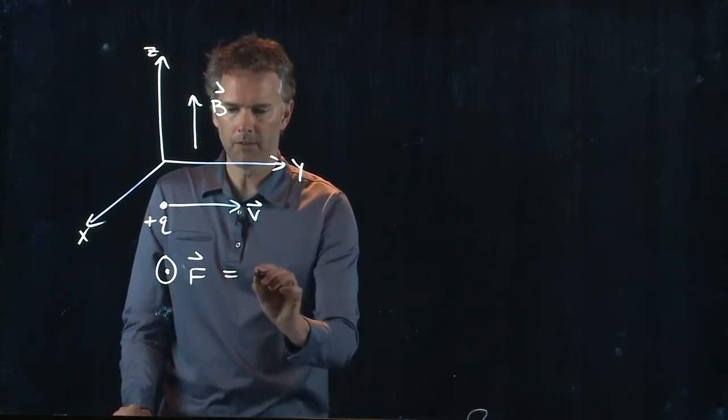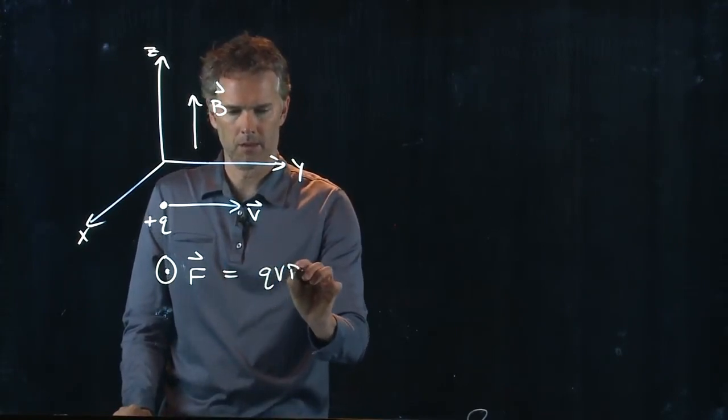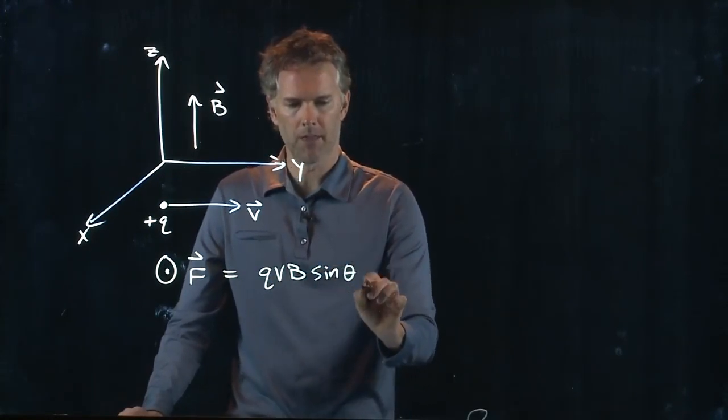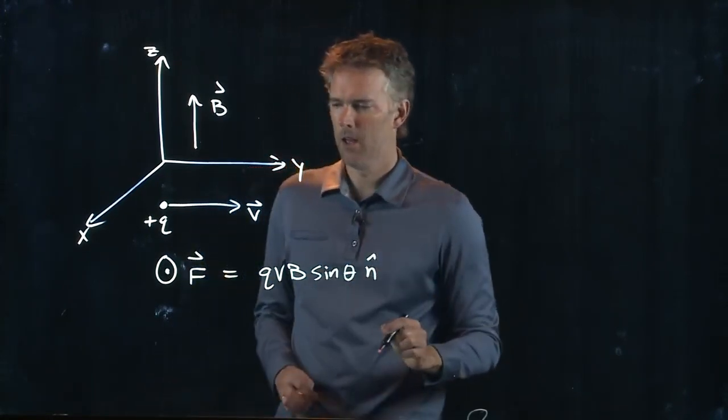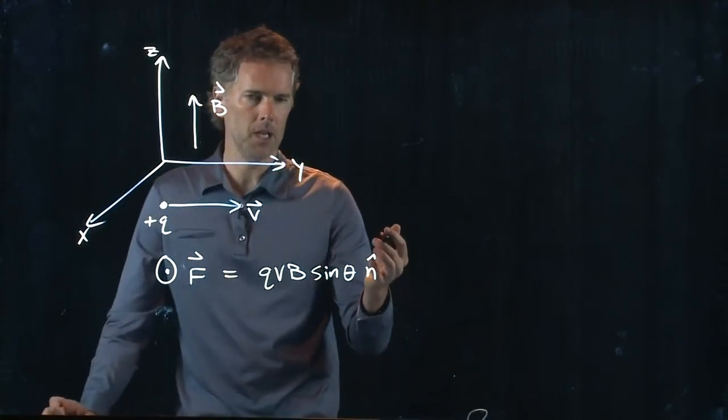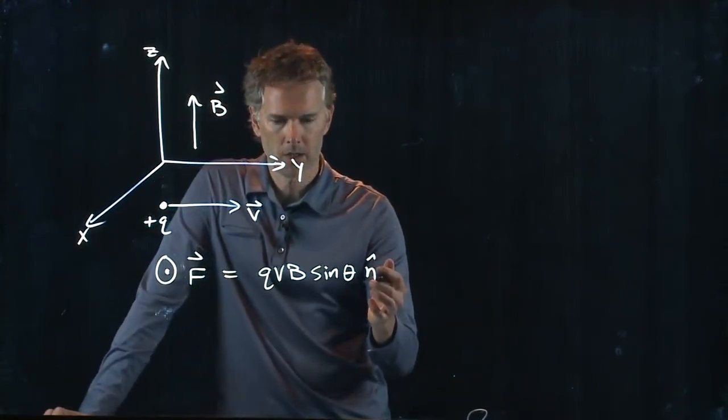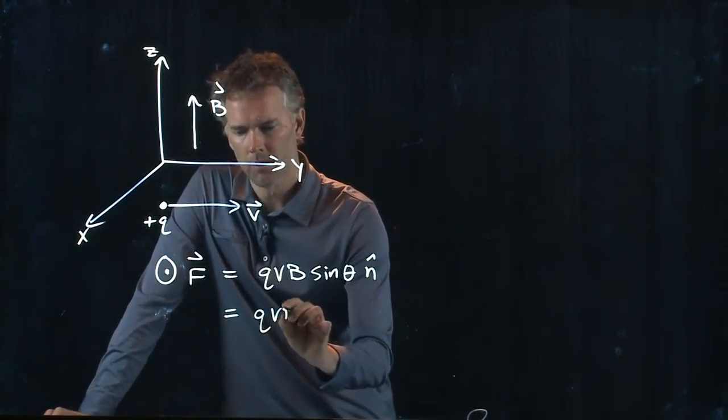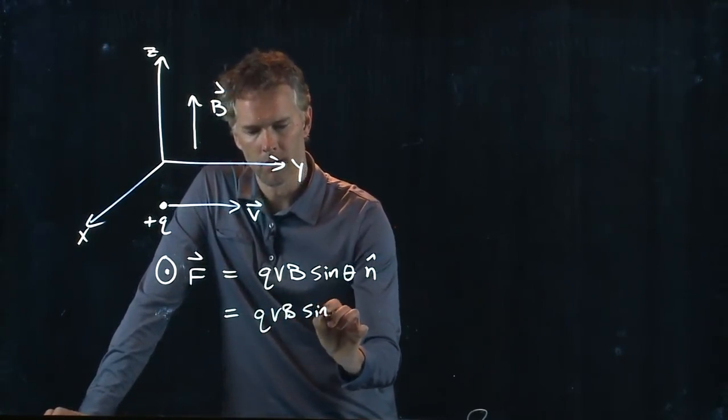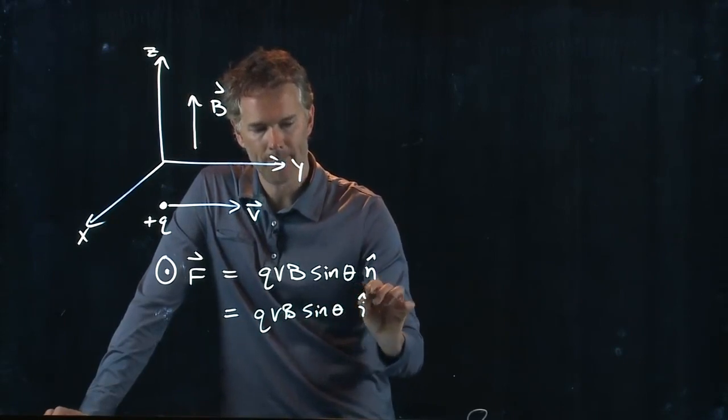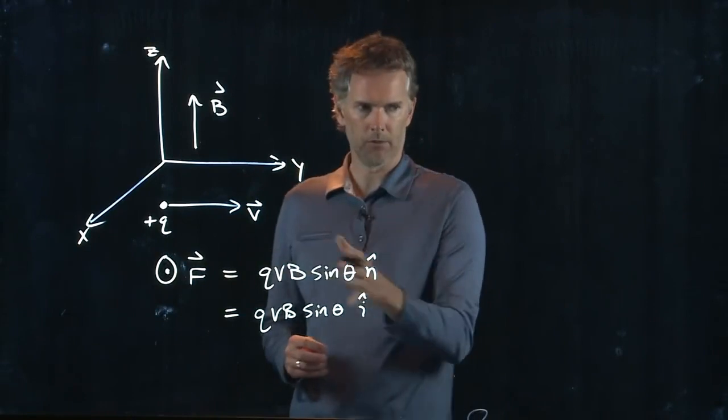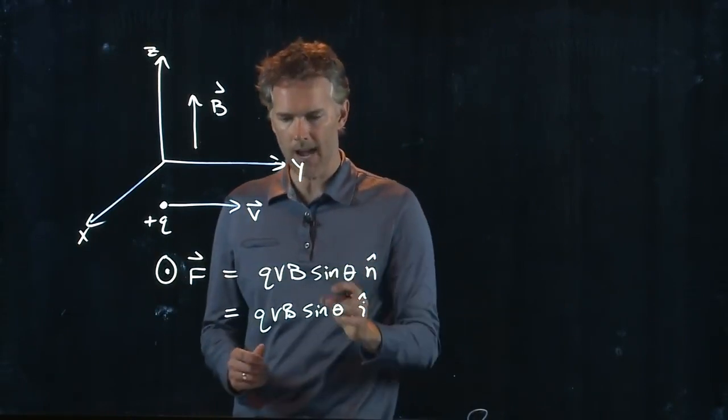So that force will be coming towards you. What is its strength? Well, it's Q, V, B, sine theta, n-hat. We just said that it's going to be in the x direction. We know that the x direction means i-hat. I, j, k, x, y, z. So n-hat becomes i-hat.